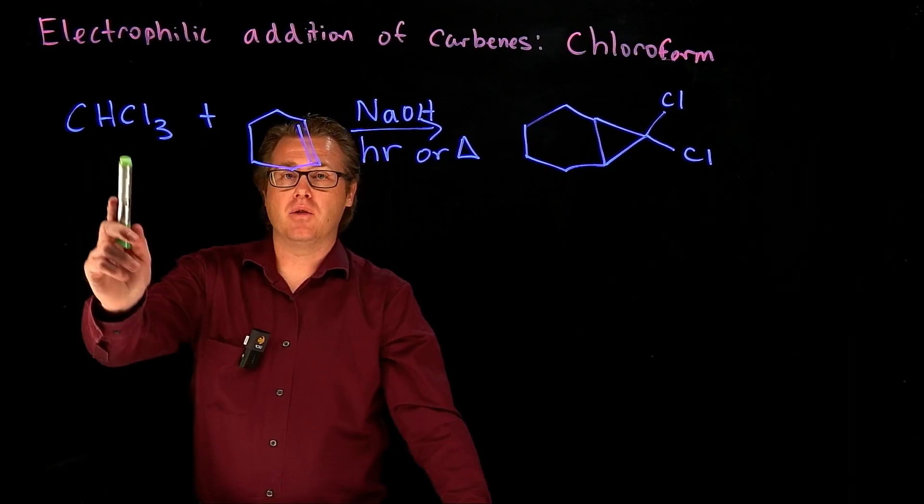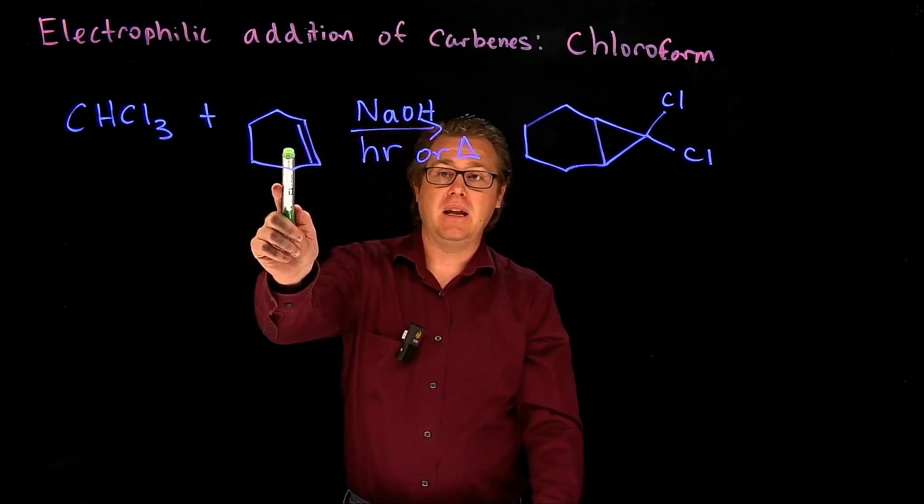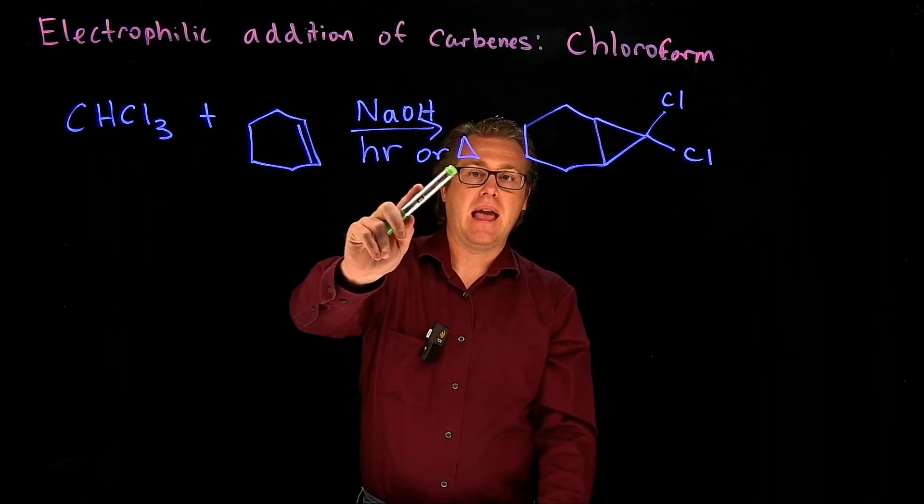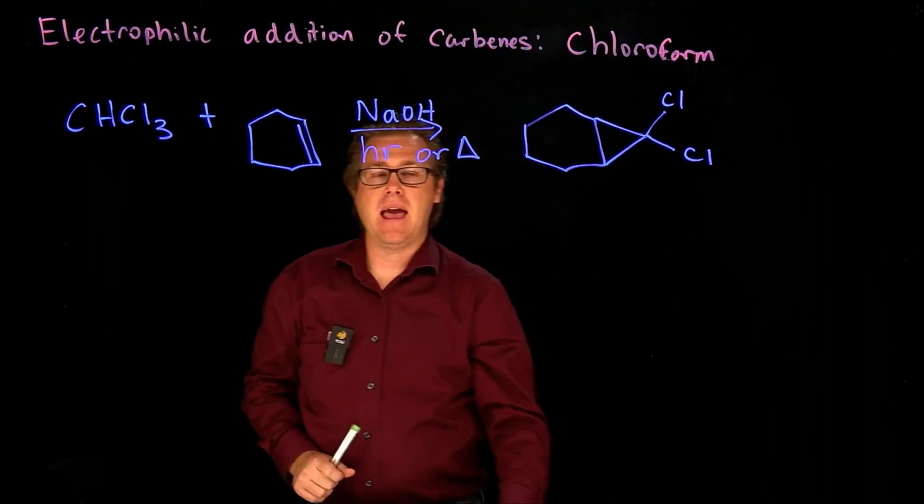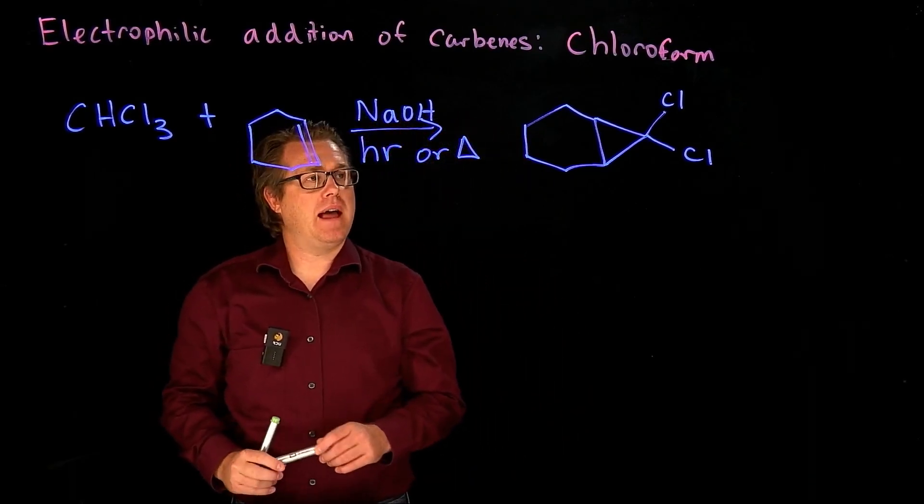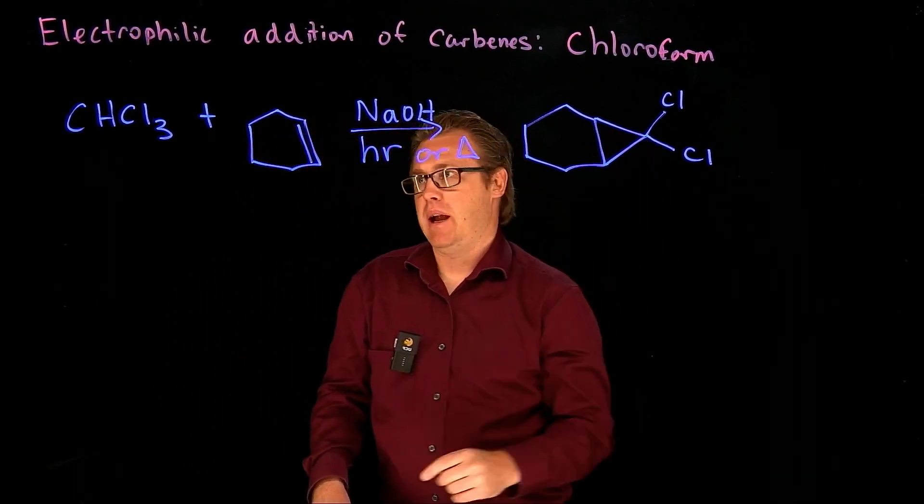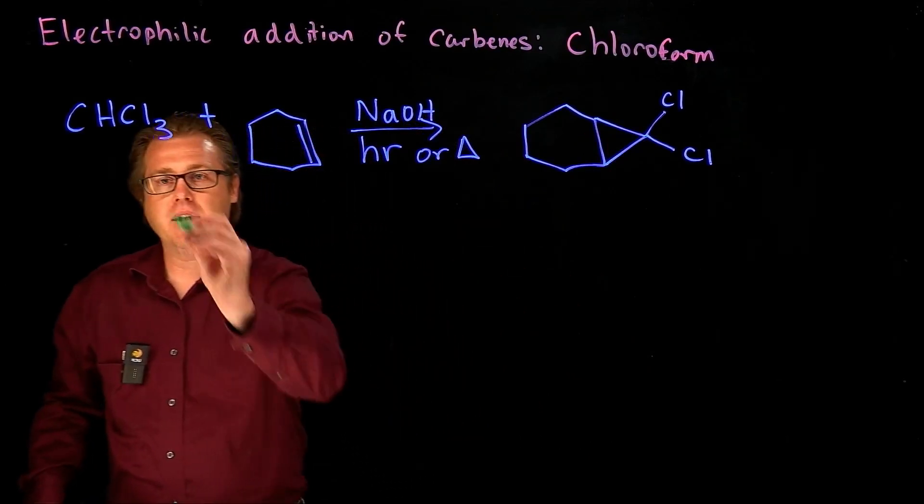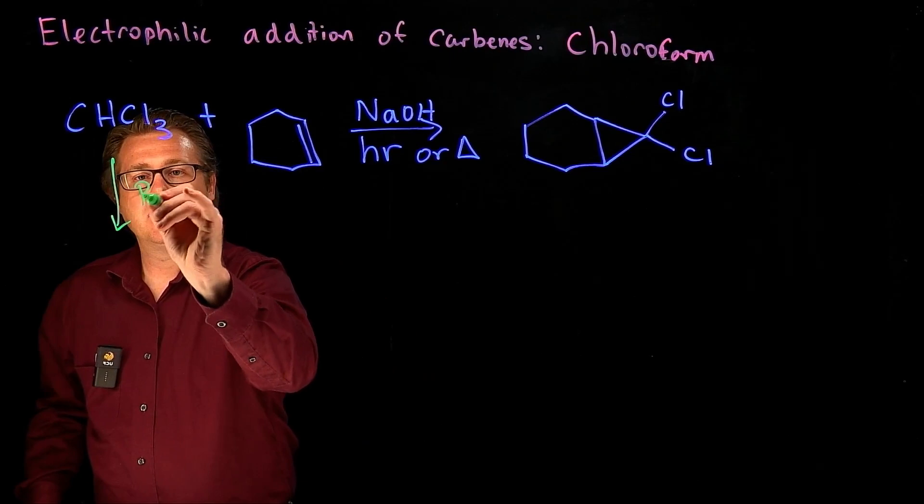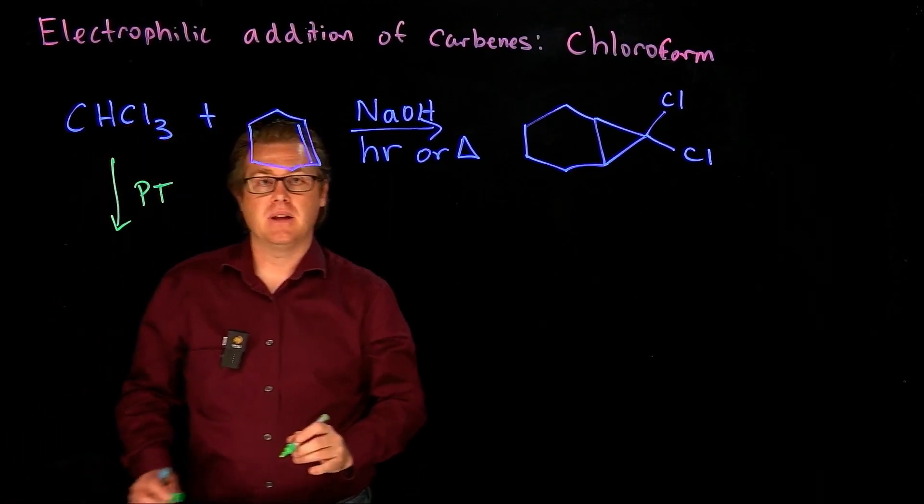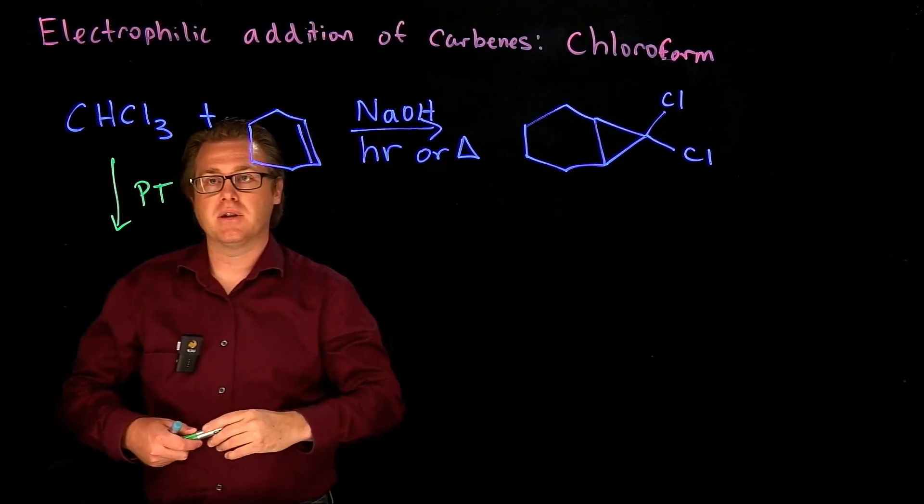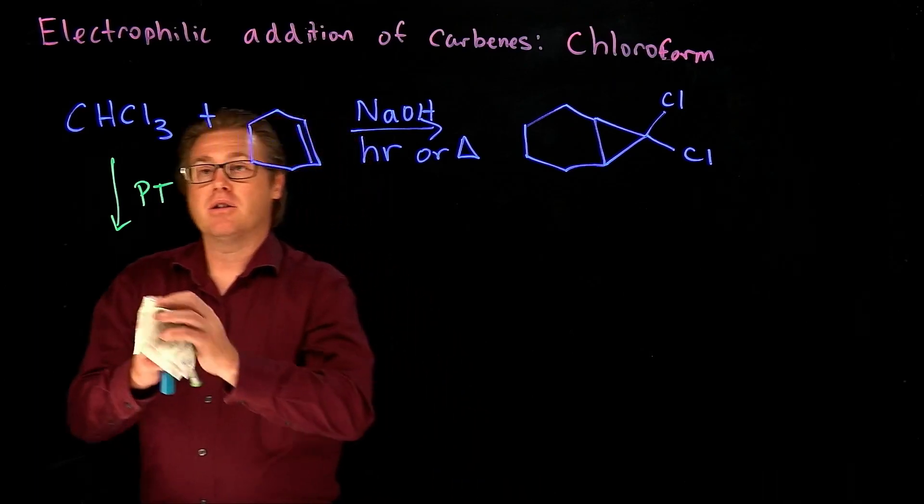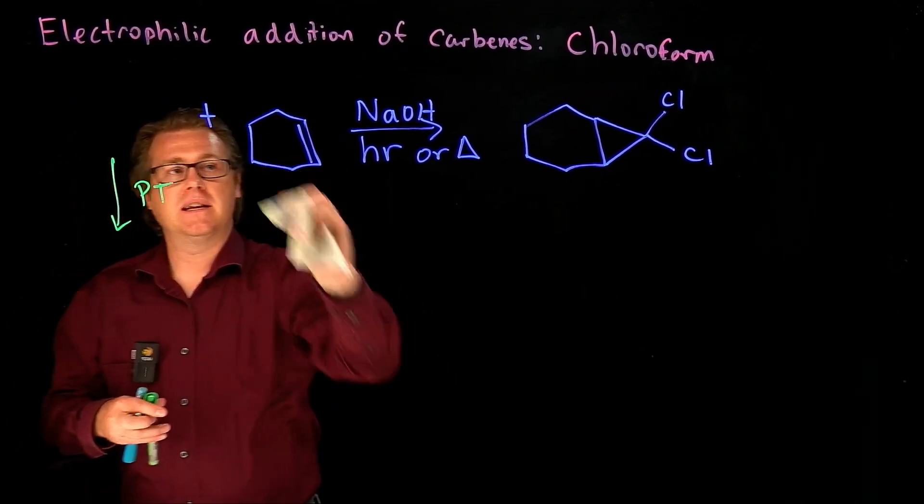We have chloroform and alkene, base, and heat. And when we do that, we can form this three-membered ring. So how do we do this? Pretty cool here. We have a proton transfer, a very simple proton transfer. And if I expand out chloroform, we'll see that a little bit better.